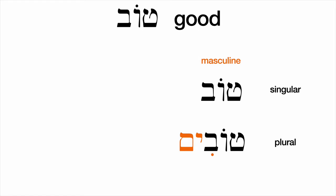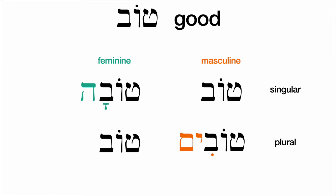There are two genders in Hebrew. So if we were modifying a feminine Hebrew noun, we would take tov and add ah — tovah. And the feminine plural would be tovot.